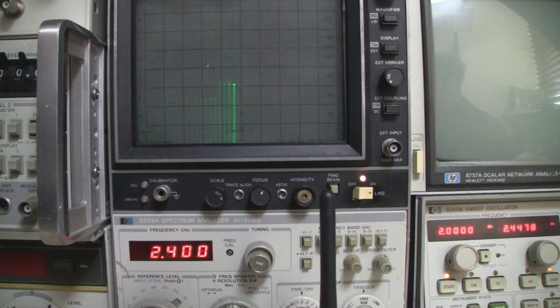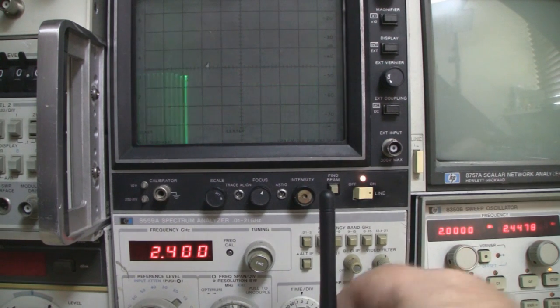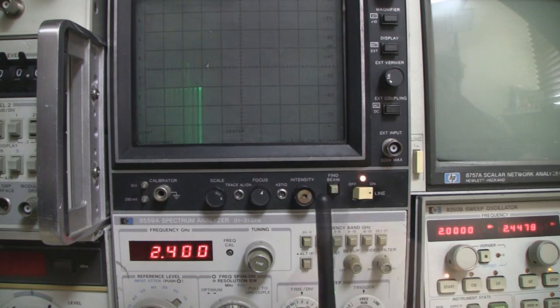Now this is an interesting one because we're getting a frequency response just before 2.4 gigahertz so I will bet that this antenna has been cut a little bit too long. We'll put that to one side and we'll take a look at it in a minute.